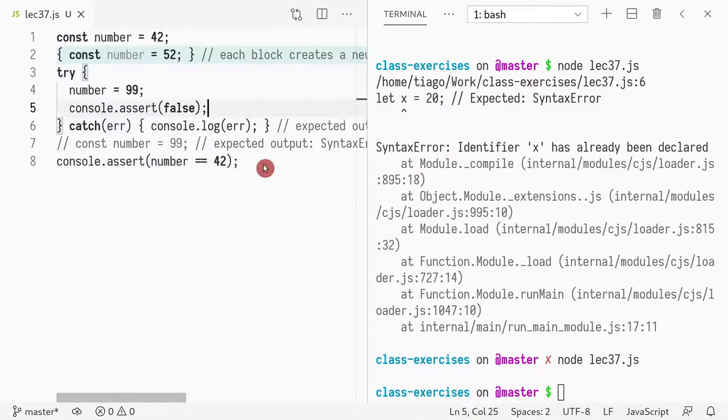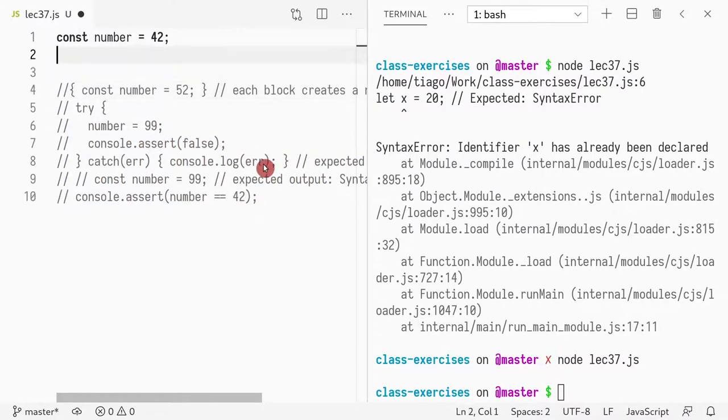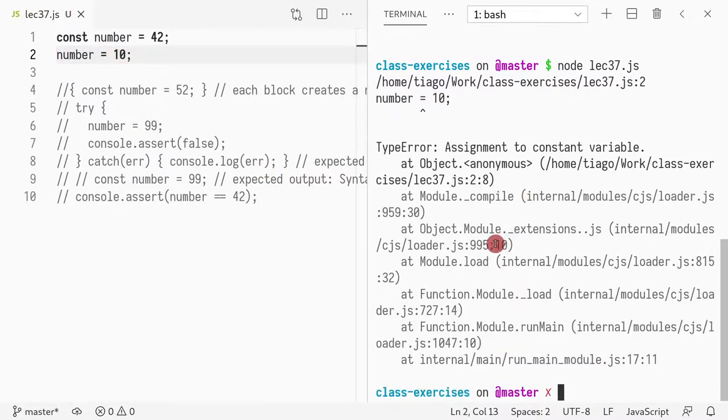So if I write it in this way, let me comment this out. Simplest example. I have a number, and then what I want to do equals 10. I try to assign another number, I get an error. You cannot assign a const to that variable because it's const.